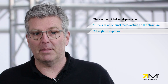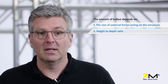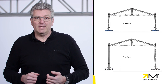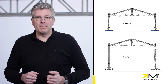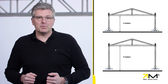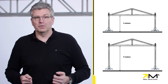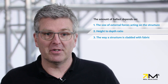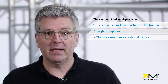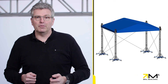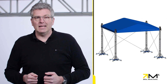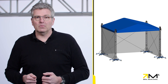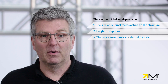Second, the height to depth ratio. A structure with a given height and a small footprint needs more ballast than the same structure with a large footprint. Third, the way a structure is cladded with fabric. If a roof has just a top canopy, it needs less ballast than the same one which is cladded on three sides.